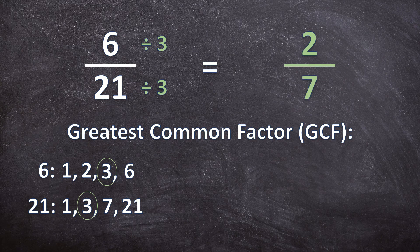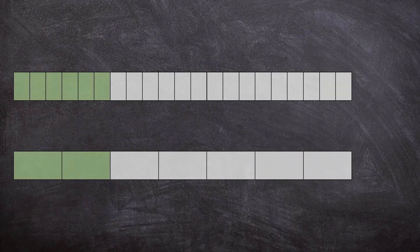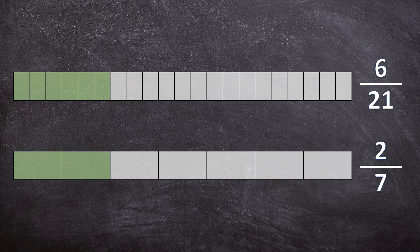So now let's go and visualize this for ourselves. The first one is the first fraction we had, six over 21, and the second one is the simplified fraction two over seven. Can you see that exactly the same amount is green and exactly the same amount is white? So these are also equivalent fractions.